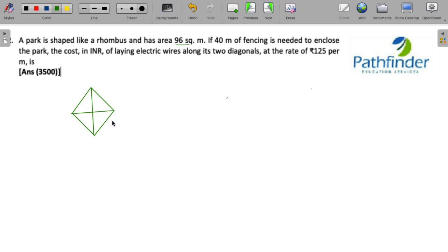So we have a rhombus here, ABCD. In a rhombus we know that diagonals are perpendicular bisectors of each other, and area of rhombus is equal to half into d1 into d2, where d1 and d2 are diagonals.